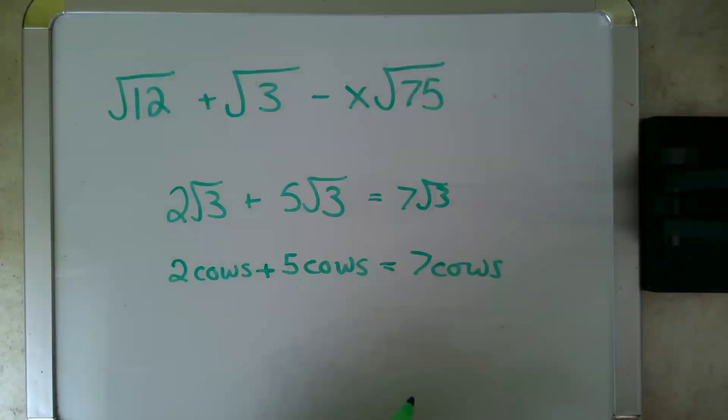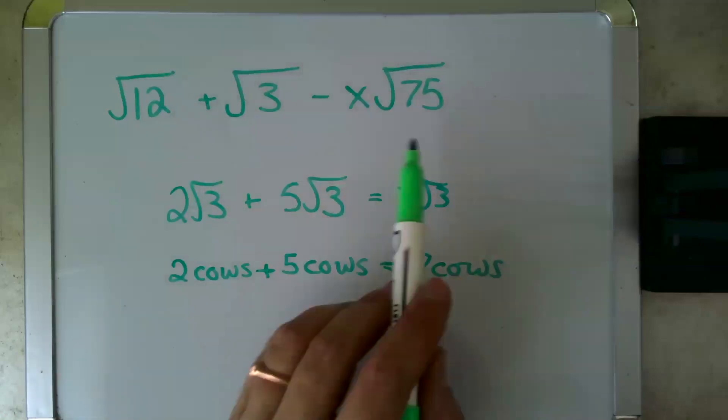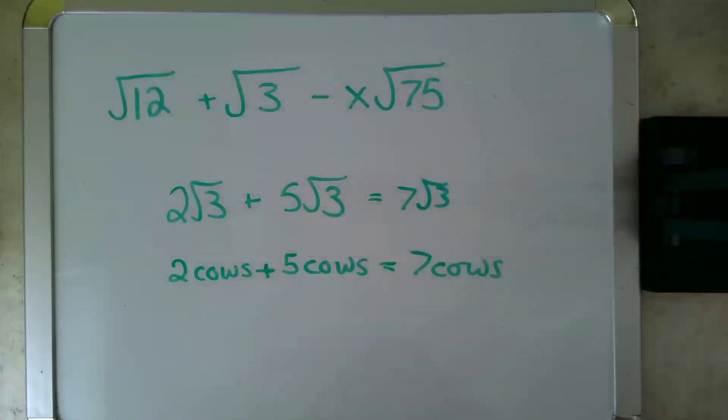There's nothing else to pull out, but I'm going to guess that if they want us to do this problem, root 12 is going to turn into something root 3, and so is root 75. So let's take a look at how.